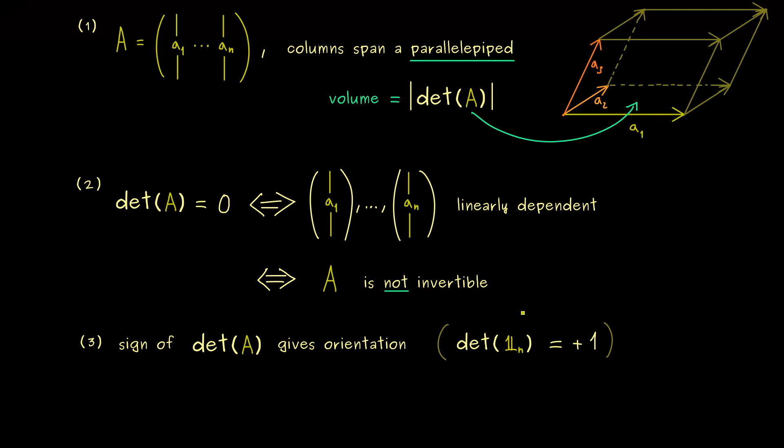However, in order to get a better visualization, we will start talking about the determinant in 2 dimensions. Afterwards, we can generalize that and then we can also talk about a lot of calculation rules. For example, we will talk about a so-called Leibniz formula and a so-called Laplace formula. In addition, we will also see that we can use our Gaussian elimination to calculate determinants.